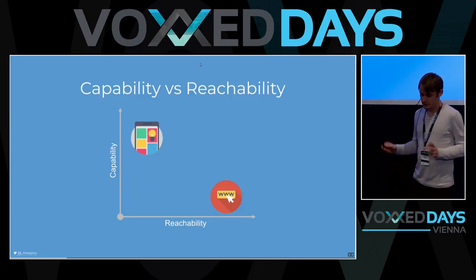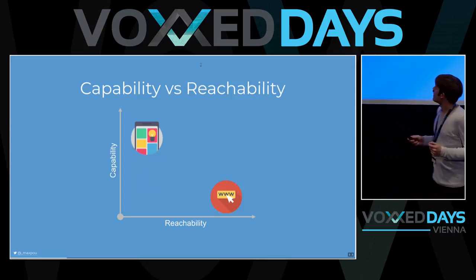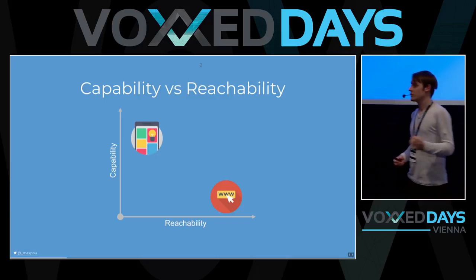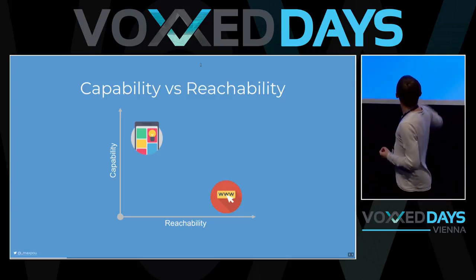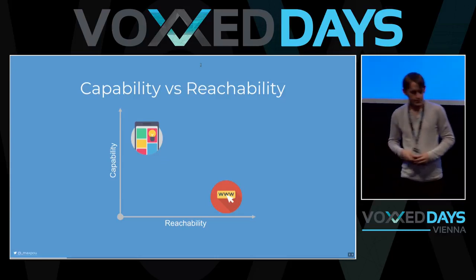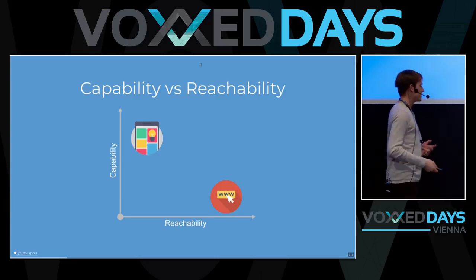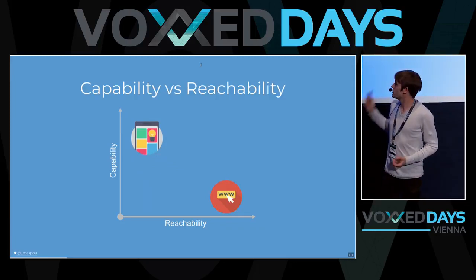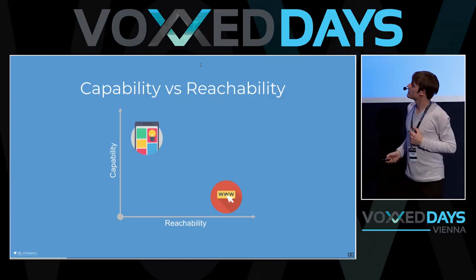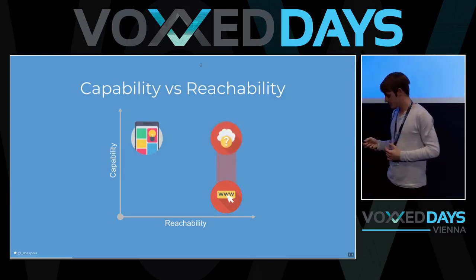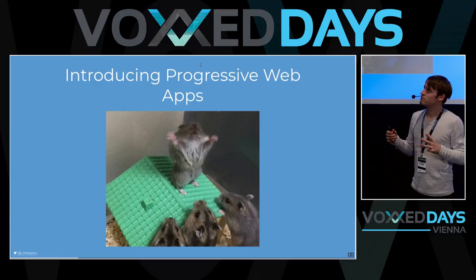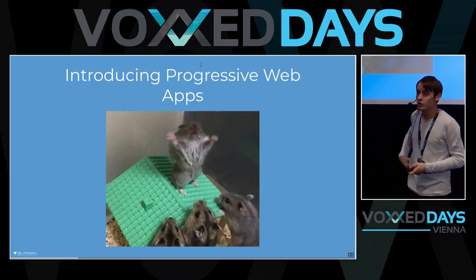So let's summarize. We have two things: the mobile app and the website. With the mobile app, we can do a lot of things — there are a lot of capabilities — but reachability is really hard. And with my web app, I can reach a lot of people, but I cannot retain them. So some people, mostly from Google, started from this point and asked: how can we increase a website and get something with more capabilities? That's the main reason to switch to something called Progressive Web Apps.